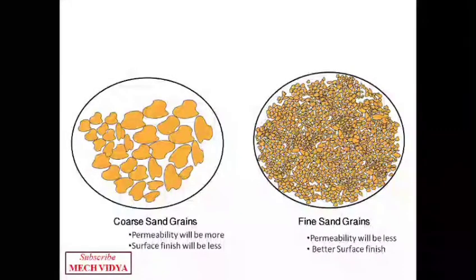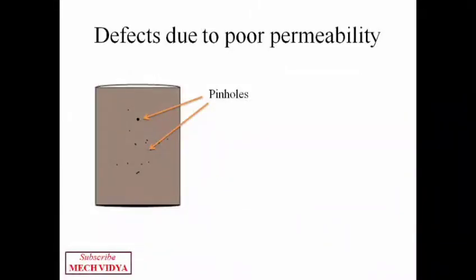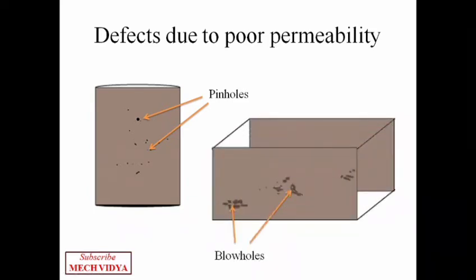If the permeability of the sand is not adequate, we get certain defects like pinholes, blowholes, etc. in the final casting. These small dots that you are seeing here are because the hot air which was unable to escape got trapped in the mold cavity.